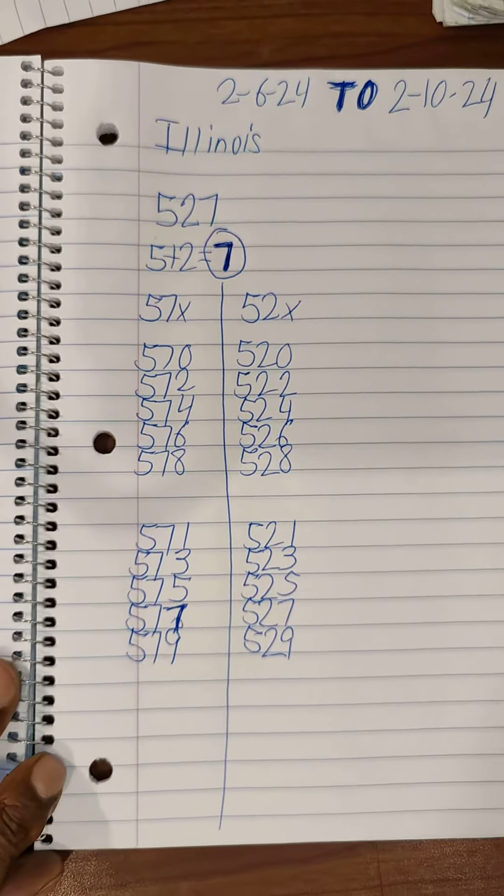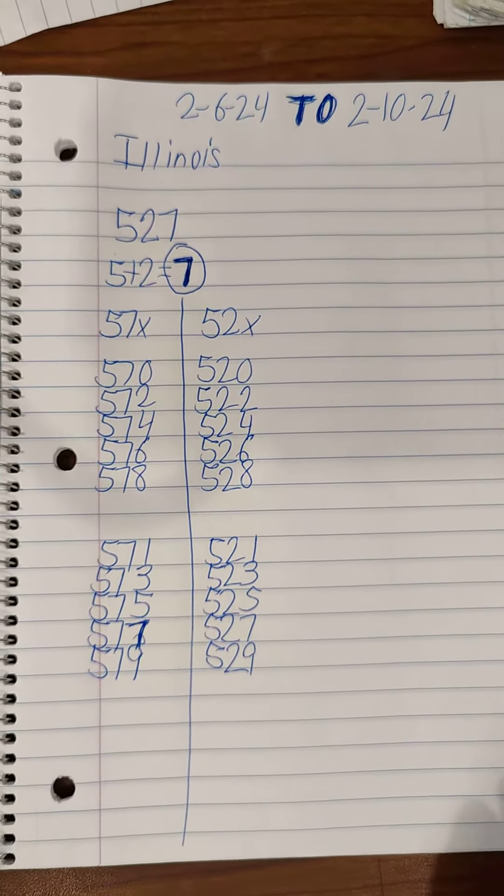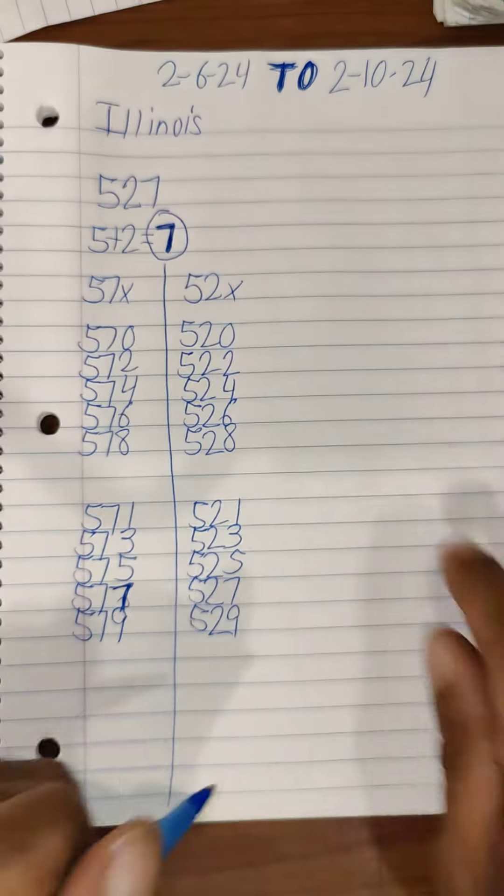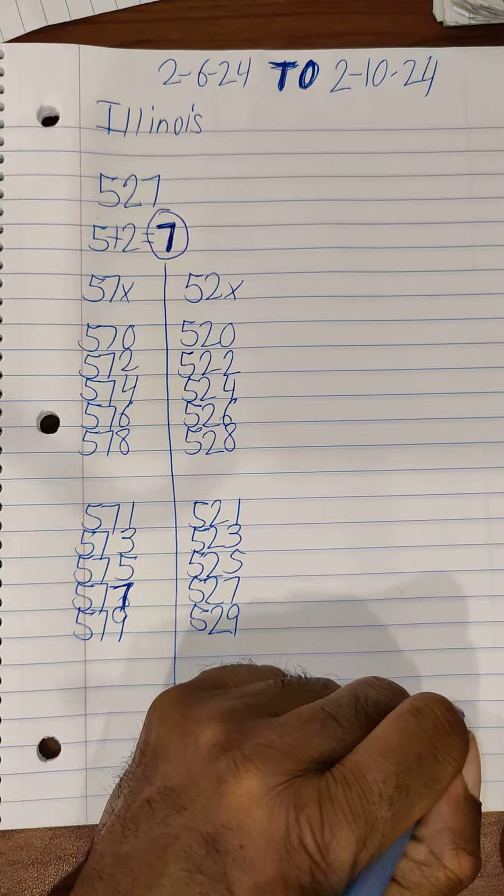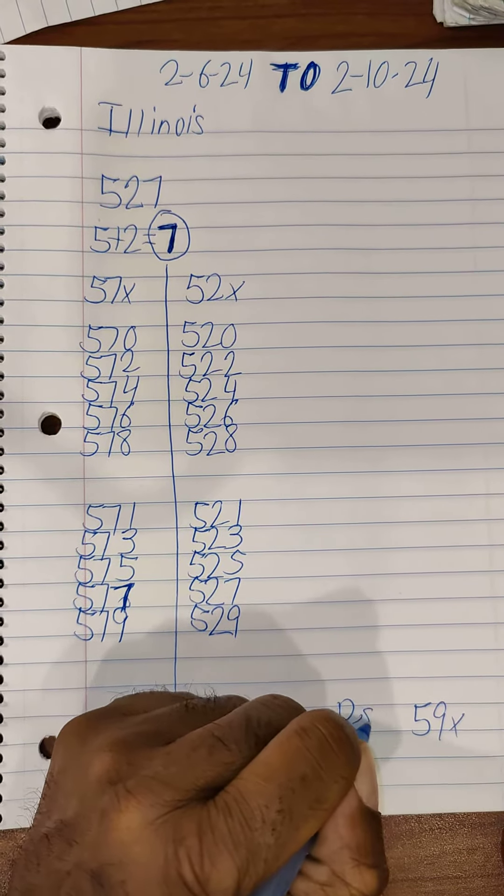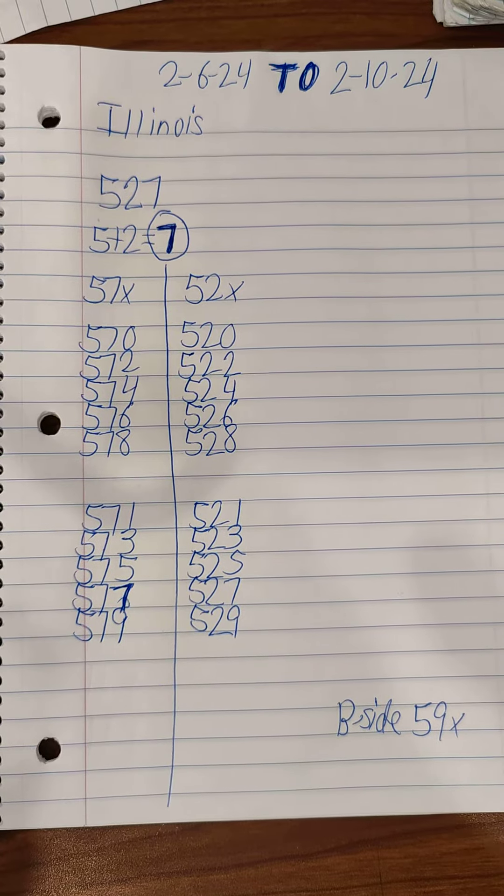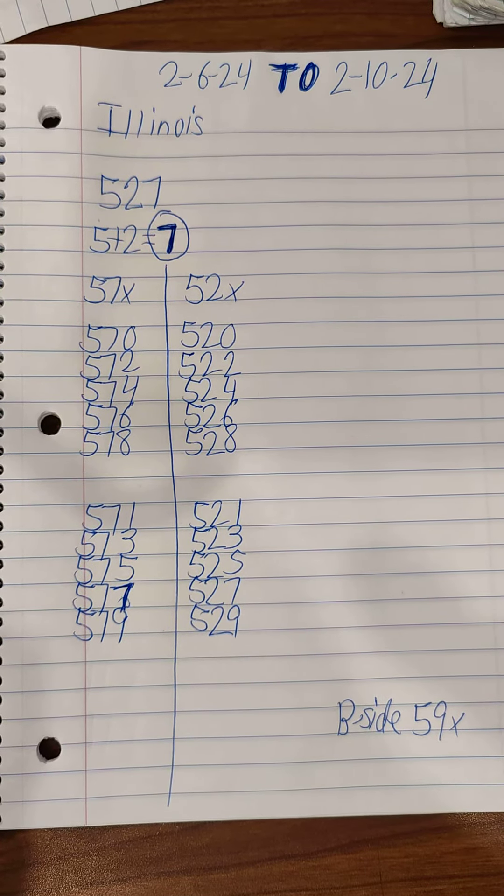Five seven versus five two pair. It can take up to three to four days. Five seven versus five two on the backside, five nine pair. Backside five nine pair.